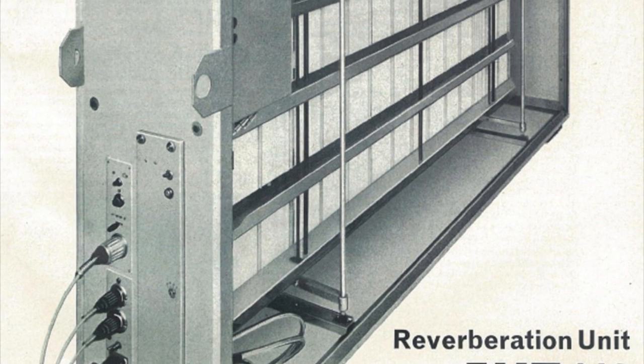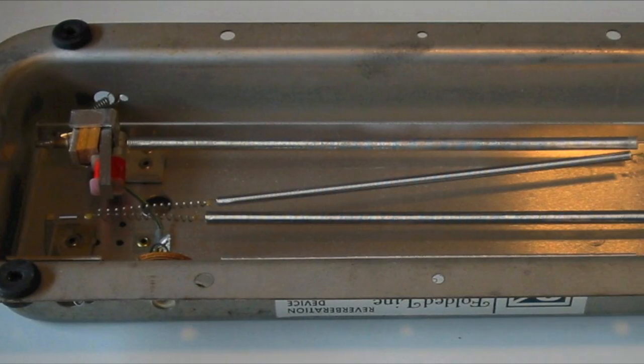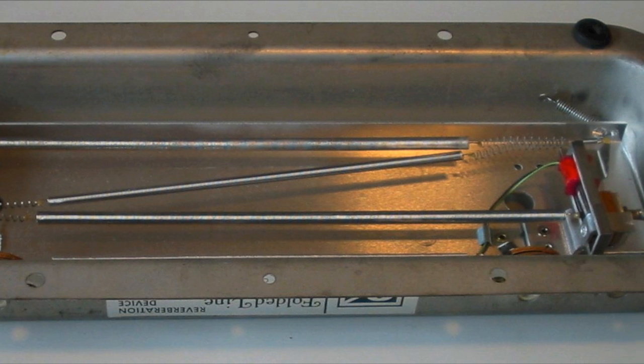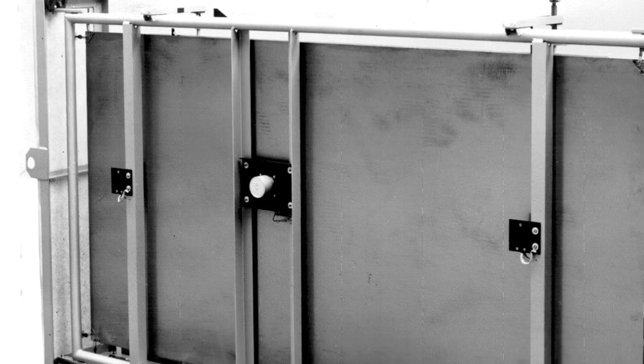Electromechanical devices such as plates and spring reverbs made their way into studios in the 1950s. In these units, a transducer vibrated a steel plate or spring and recaptured the resulting sound with a pickup. These saved space over the echo chamber and introduced their own characteristic sounds.